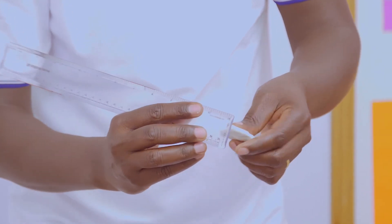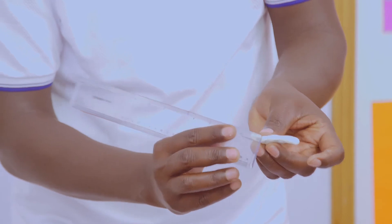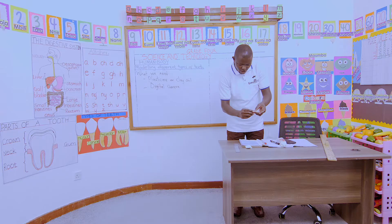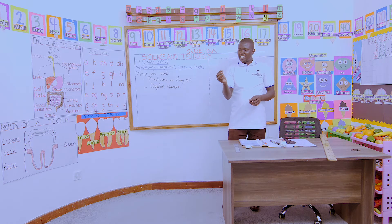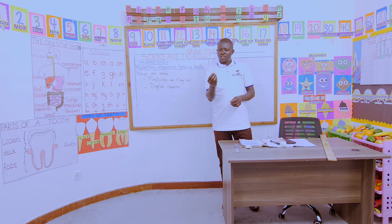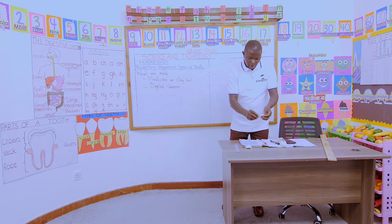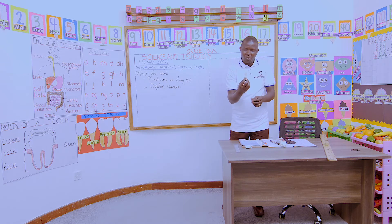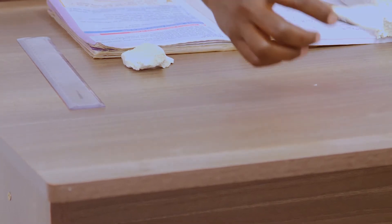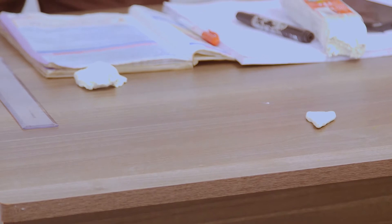I've chosen white color because remember our teeth are always white, so I came with white plasticine. This resembles an incisor — tooth or teeth. That was type one. I hope everybody has modeled something of the sort. This we call it an incisor. Can we clap for ourselves? Well done.